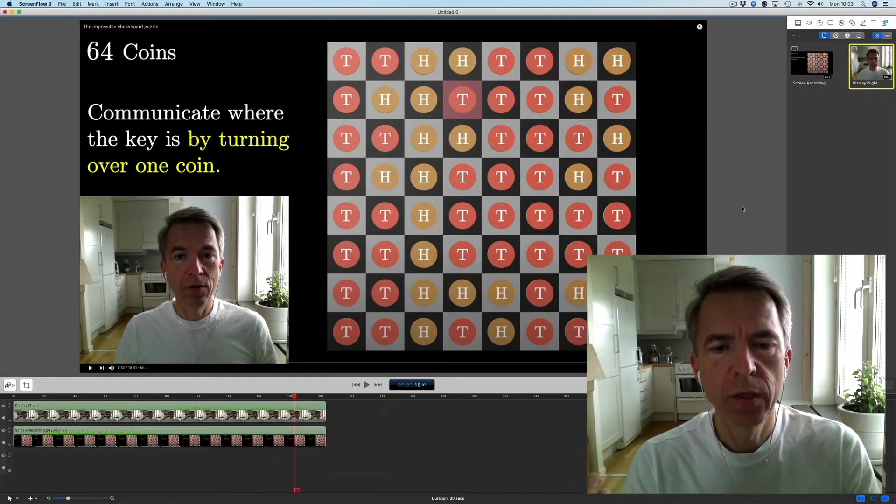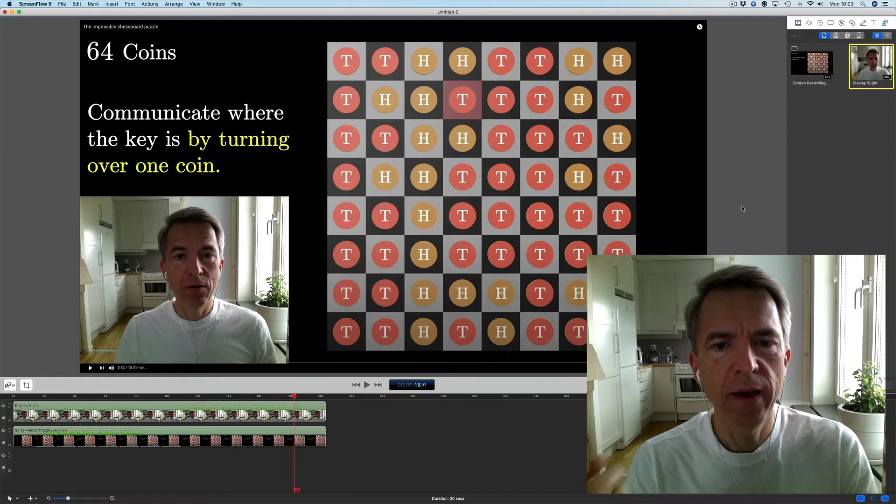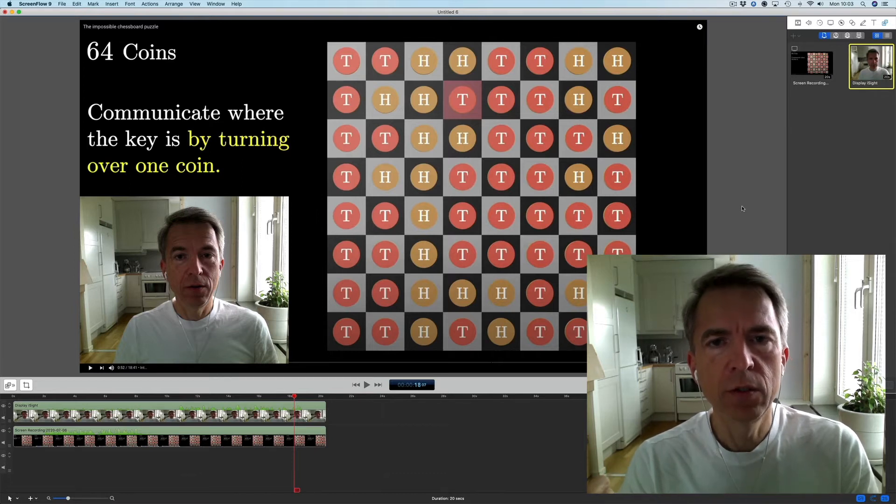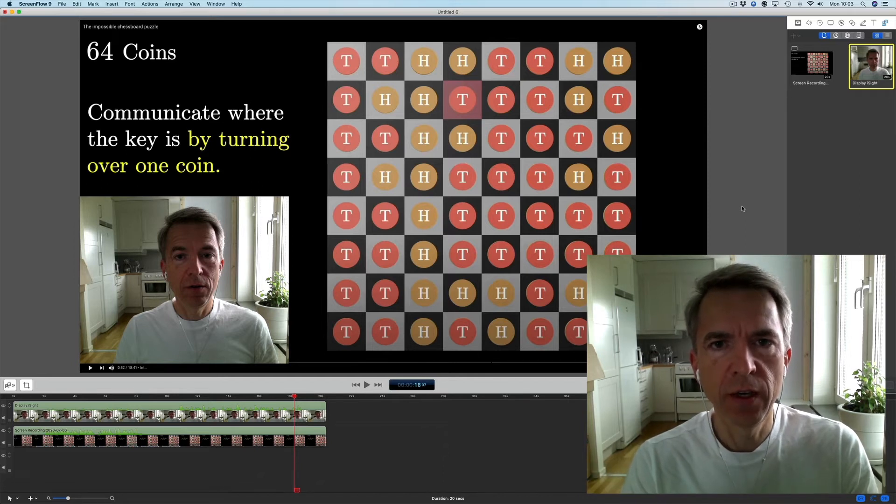So for example, if you count the heads and tails on the board and you find that the heads are less than the tails, you can by flipping a coin ensure that the key is under a heads coin. And then you agree on a strategy with prisoner number two that prisoner number two should search the key under a coin that there are less of on the board. But then of course you can only control the probability that prisoner number two will find the key. You can't actually tell prisoner number two exactly where the key is.